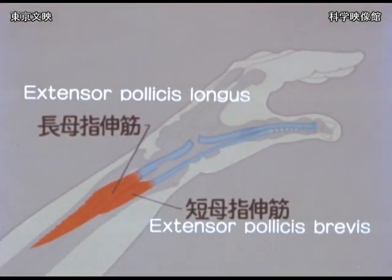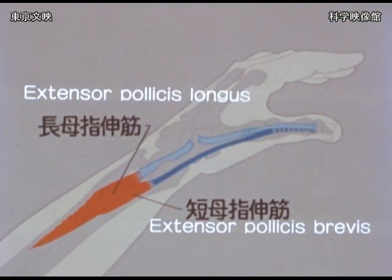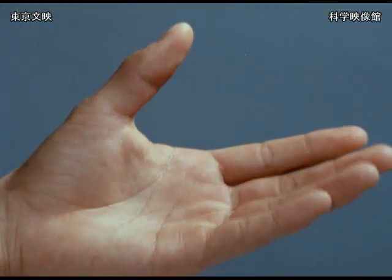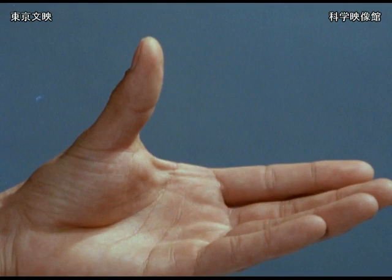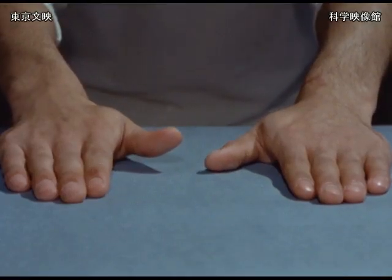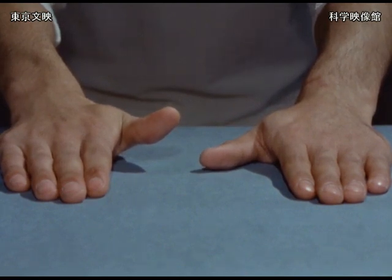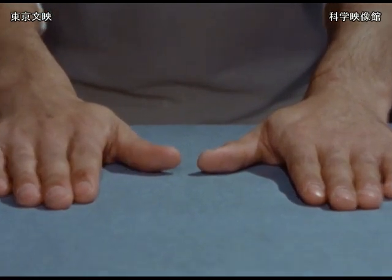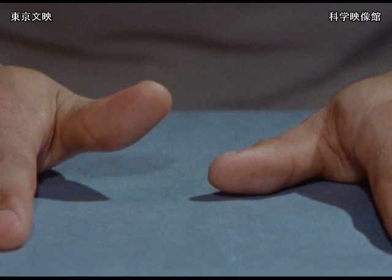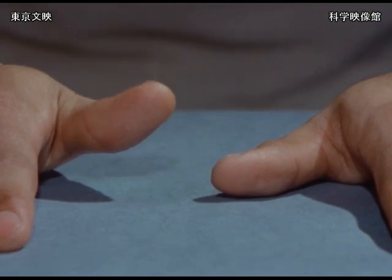There are two reasons for this. One is the fact that the extensor pollicis brevis and some of the intrinsic muscles are supplementing the extensor pollicis longus. The other is a possible adhesion of the tendon stump, which gives a dynamic tenodesis effect to the thumb in the abducted position. Thus, active extension of the thumb IP joint does not always exclude the possibility of division of the extensor pollicis longus tendon. The specific motion of this muscle is demonstrated when one raises the thumb from a table — this is a valuable test for extensor pollicis longus function.